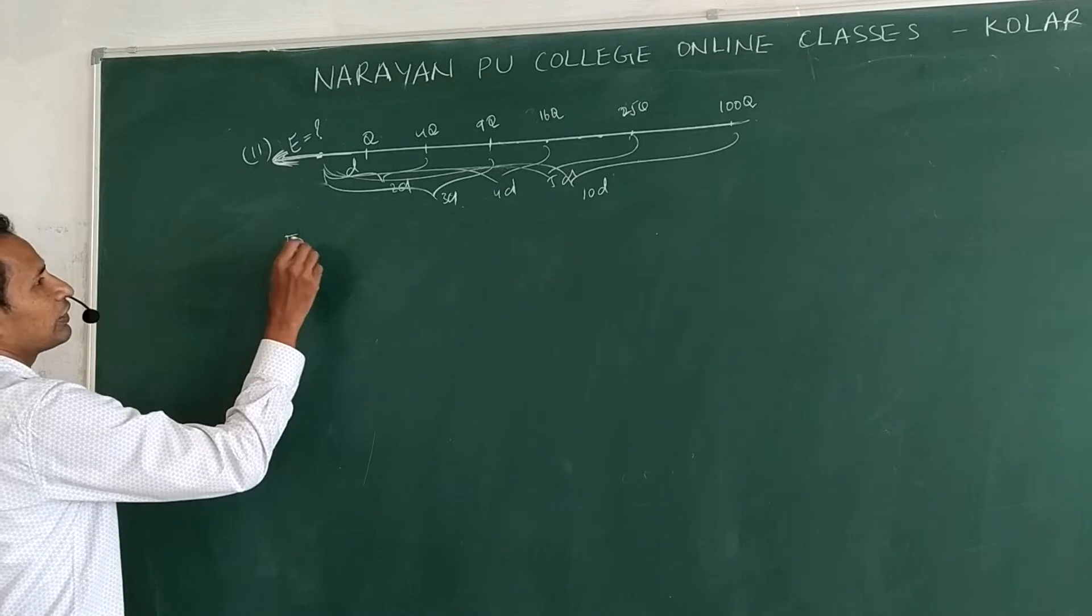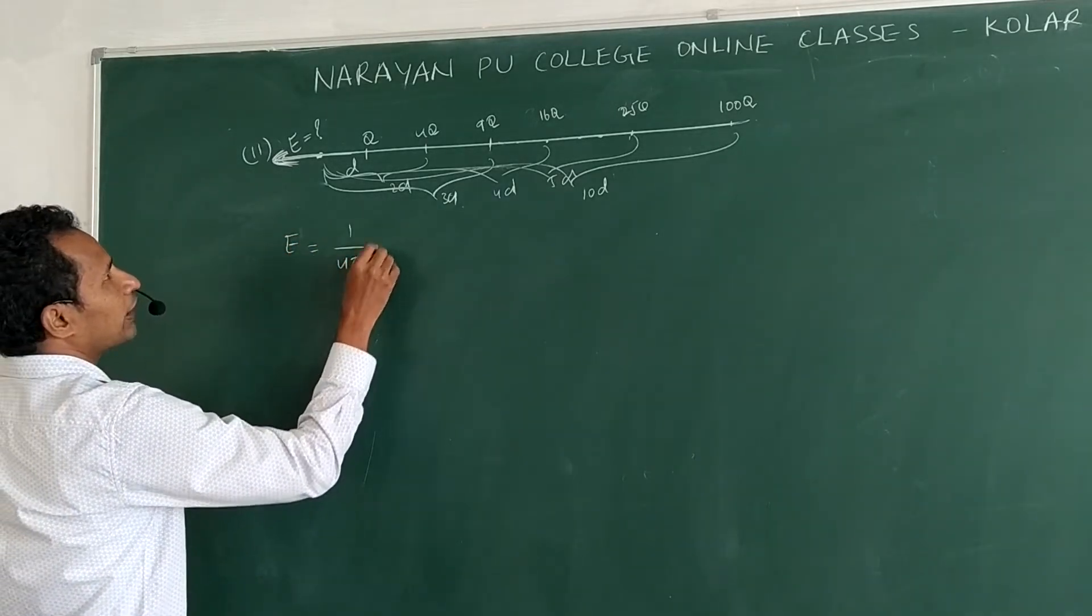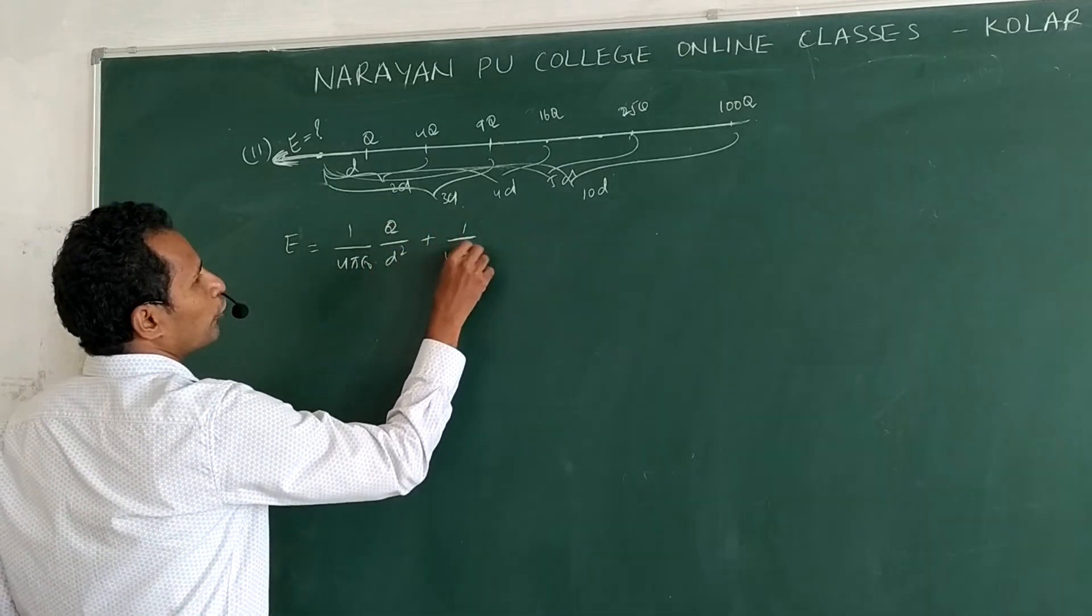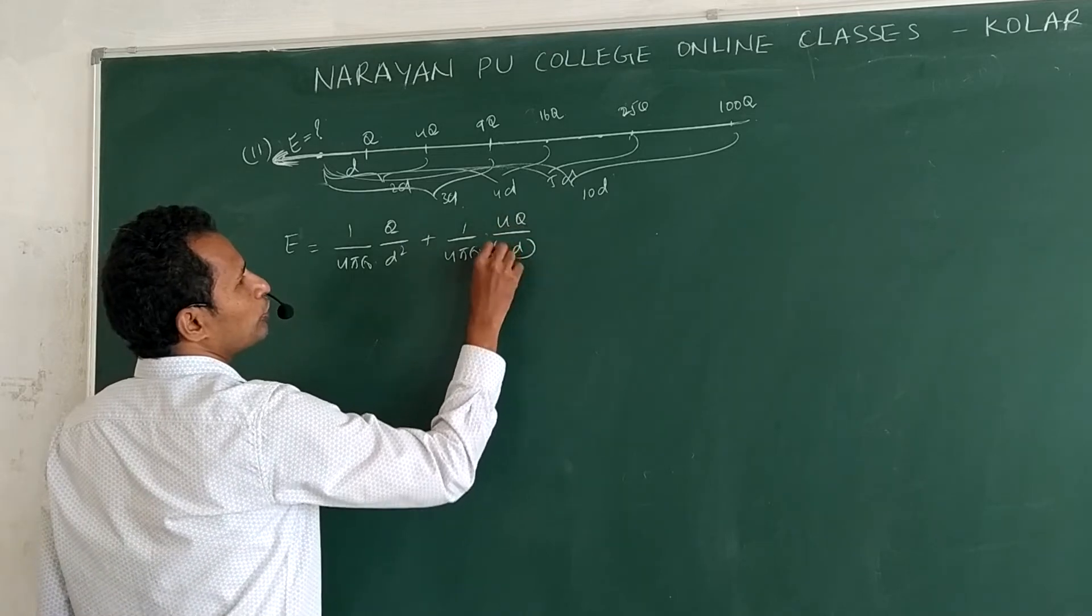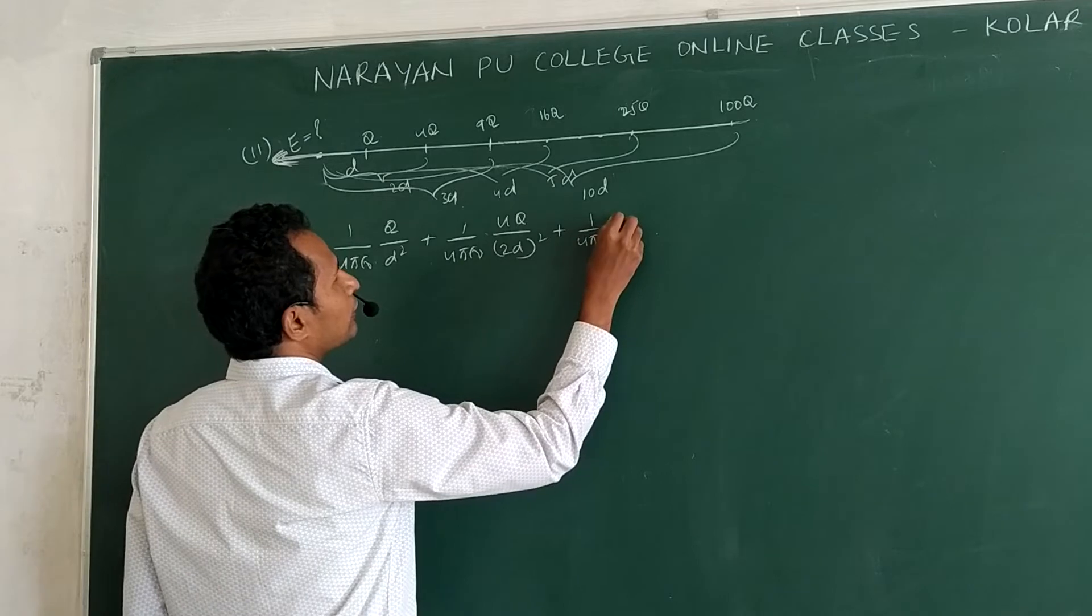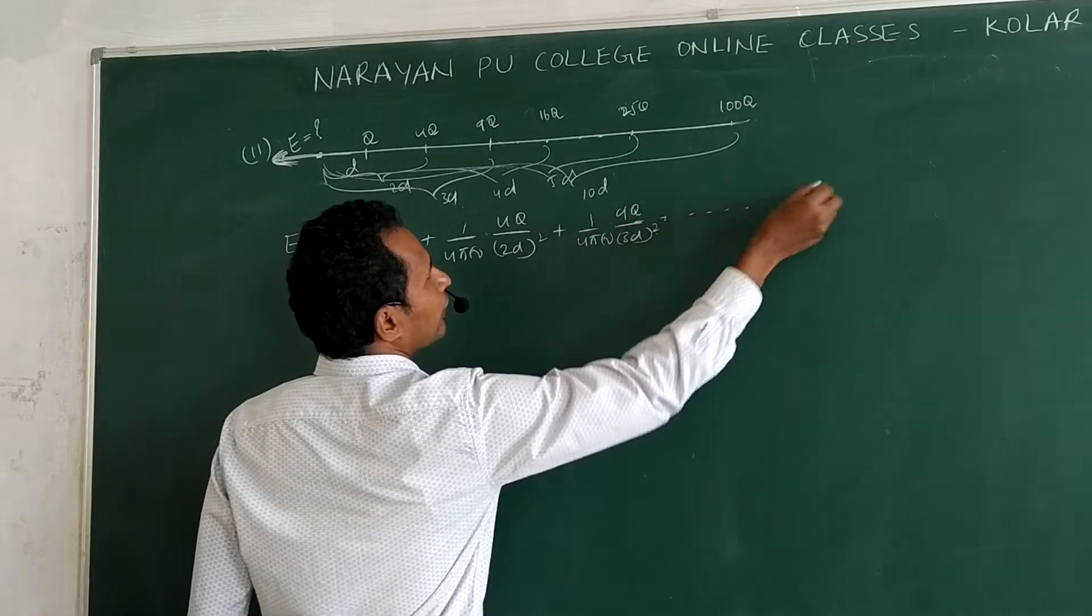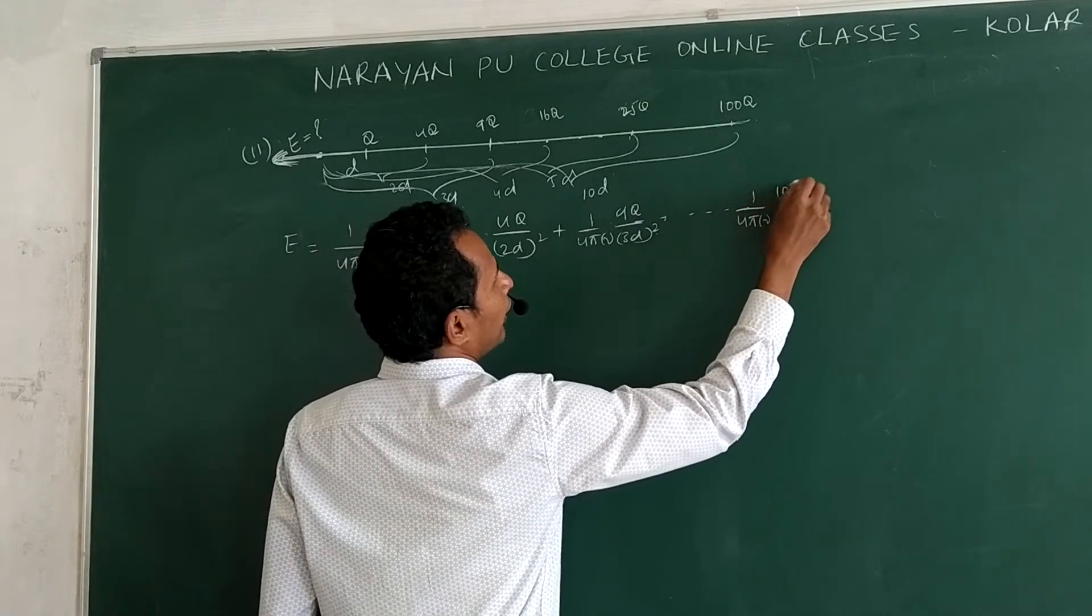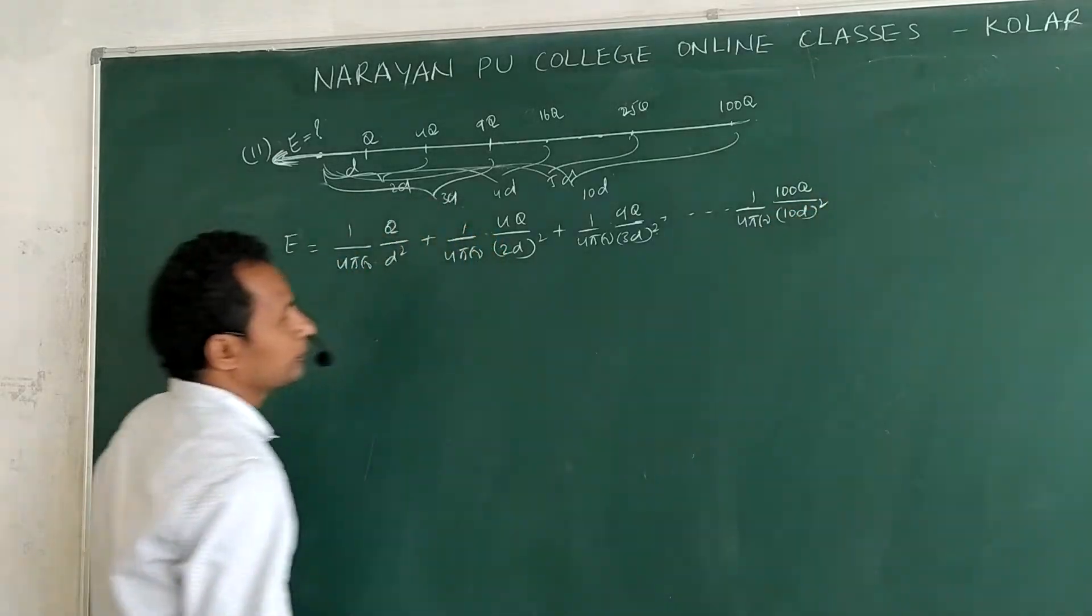Then add all fields. The field is 1 by 4 pi epsilon naught Q by d square plus 1 by 4 pi epsilon naught 4Q by 2d whole square plus 1 by 4 pi epsilon naught 9Q by 3d square and up to last of 1 by 4 pi epsilon naught 100Q by 10d square.